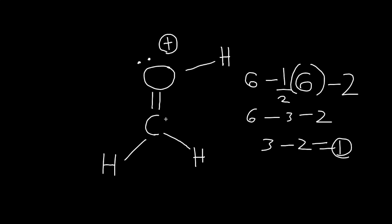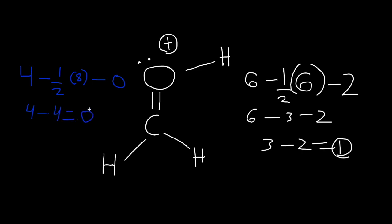Let's calculate the formal charge for this carbon. Carbon has a valence electron of four, connected to one, two, three, four — four bonds is eight electrons — minus how many lone pairs: zero lone pairs. So four minus half of eight is four, equals zero. Zero means neutral, so carbon is neutral in this case.